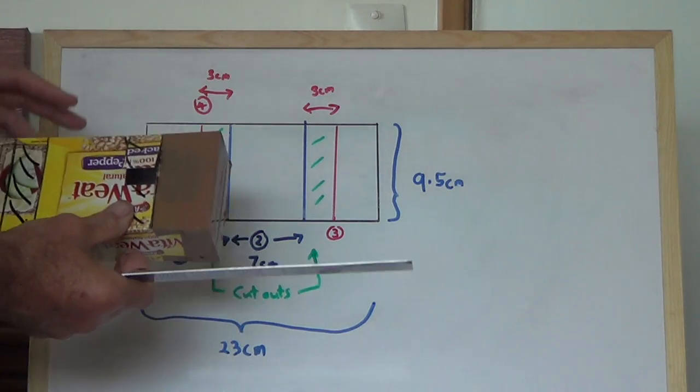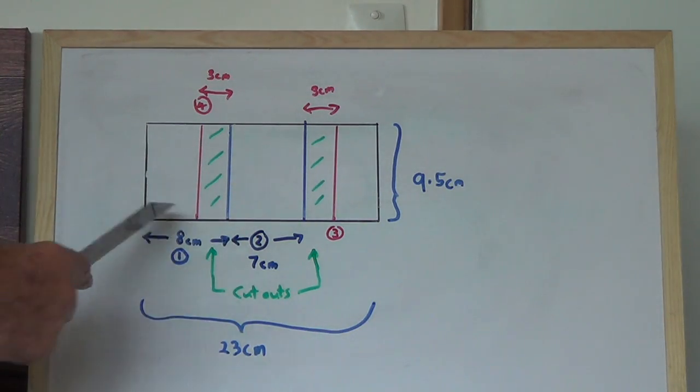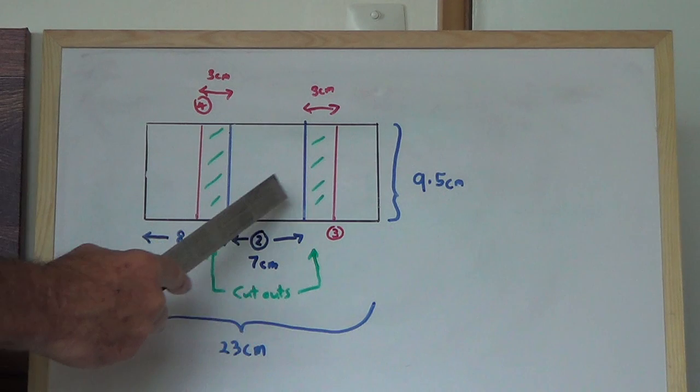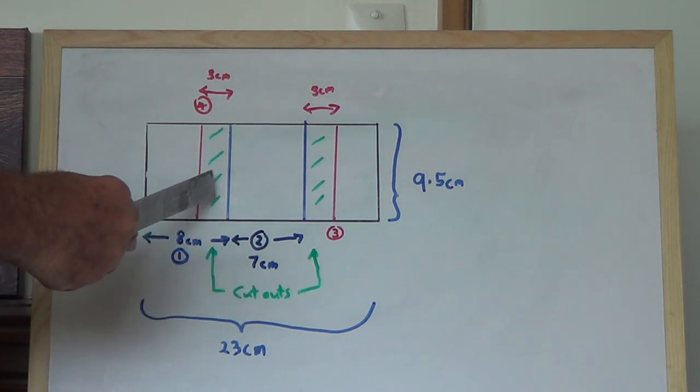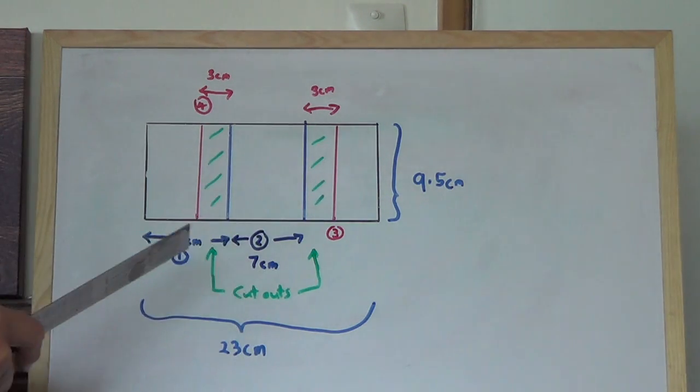Now, once I've measured up the box. See the first step is 8cm to there. 7cm to there. Come back. 3cm, draw another line. Come back. 3cm, draw another line.